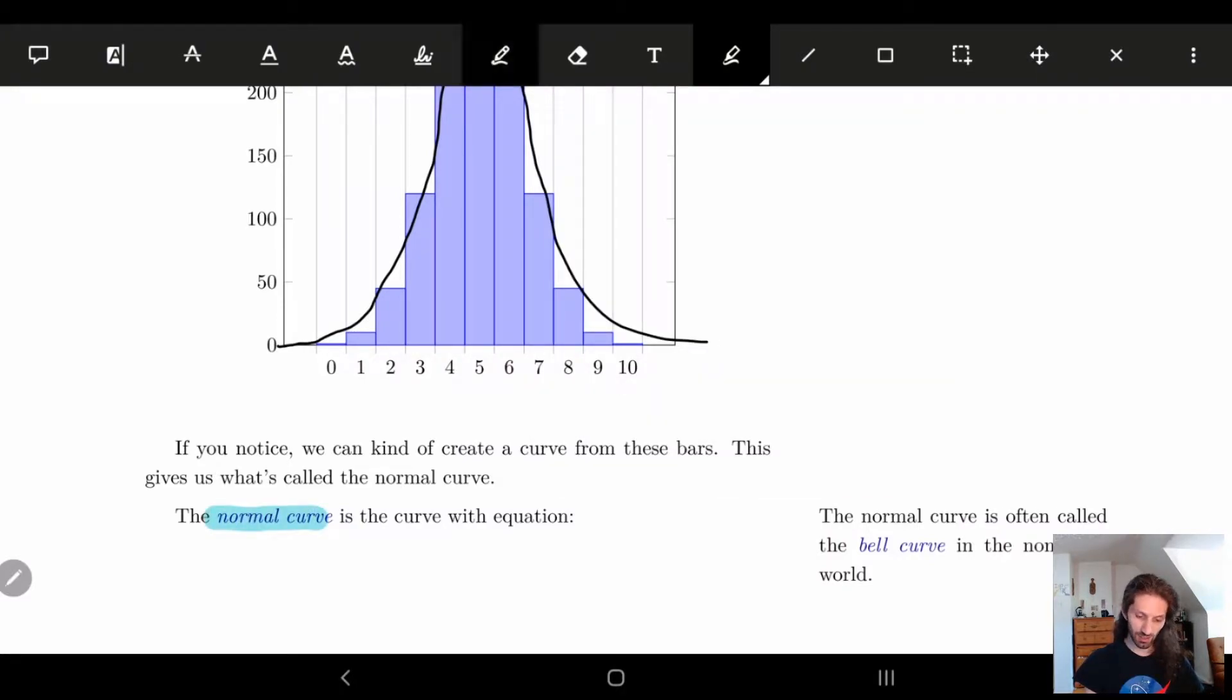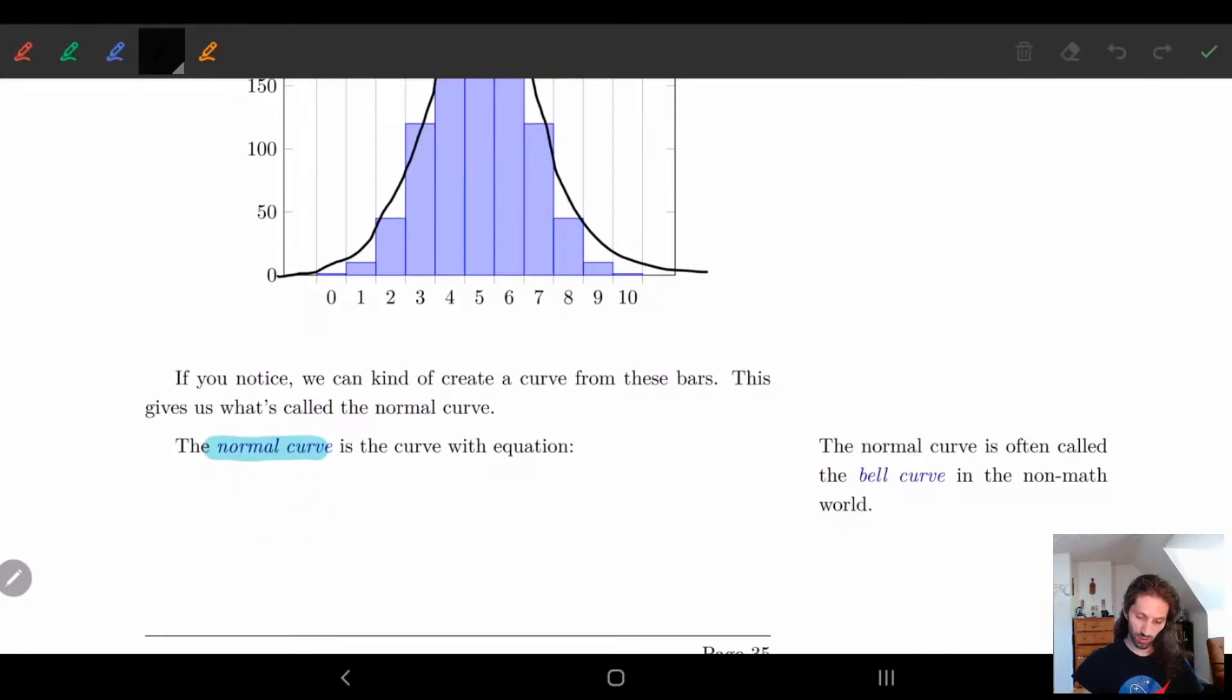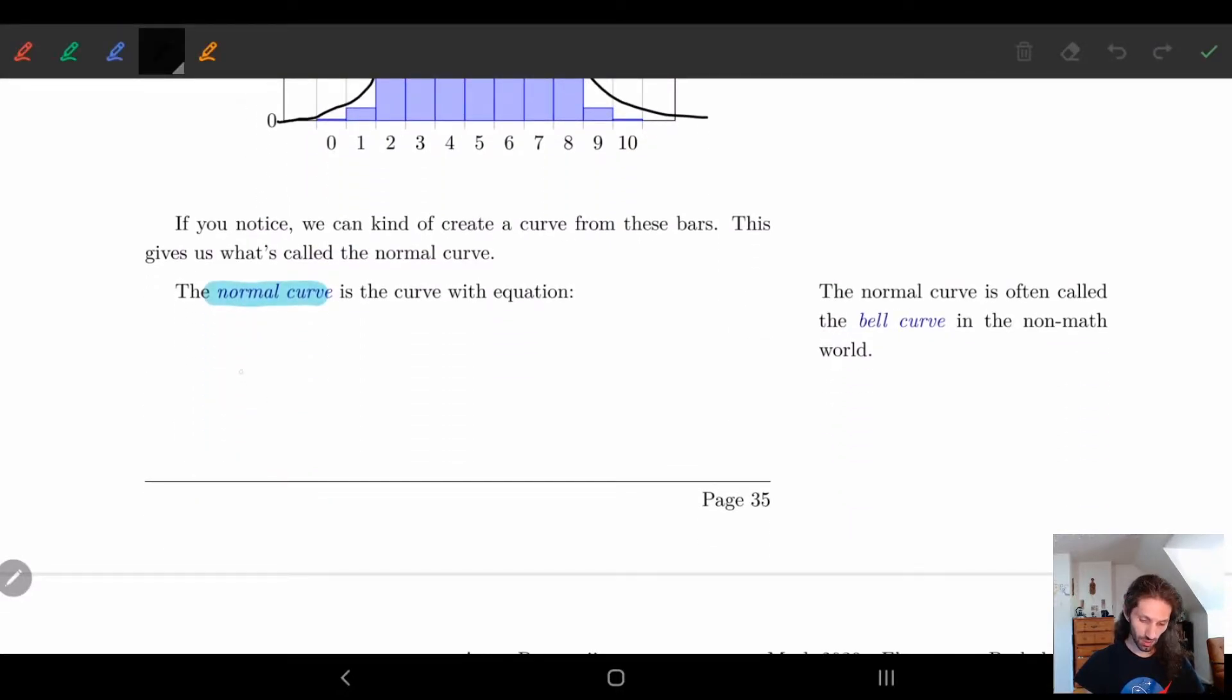And it's given by this equation. So the normal curve is given by the equation: y equals 1 over sigma times the square root of 2 pi, times e to the minus 1 half, times x minus mu squared over sigma squared. Nice exciting little formula.